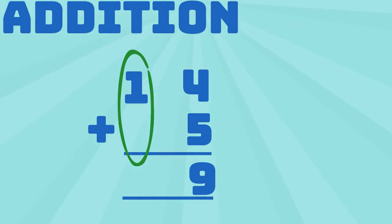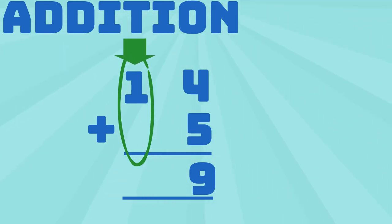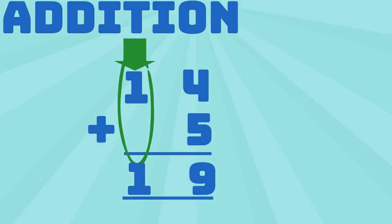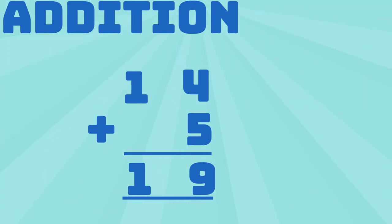1 lemon plus 0 equals 1. That means 1 plus 0 equals 1. Therefore, 14 plus 5 equals 19.